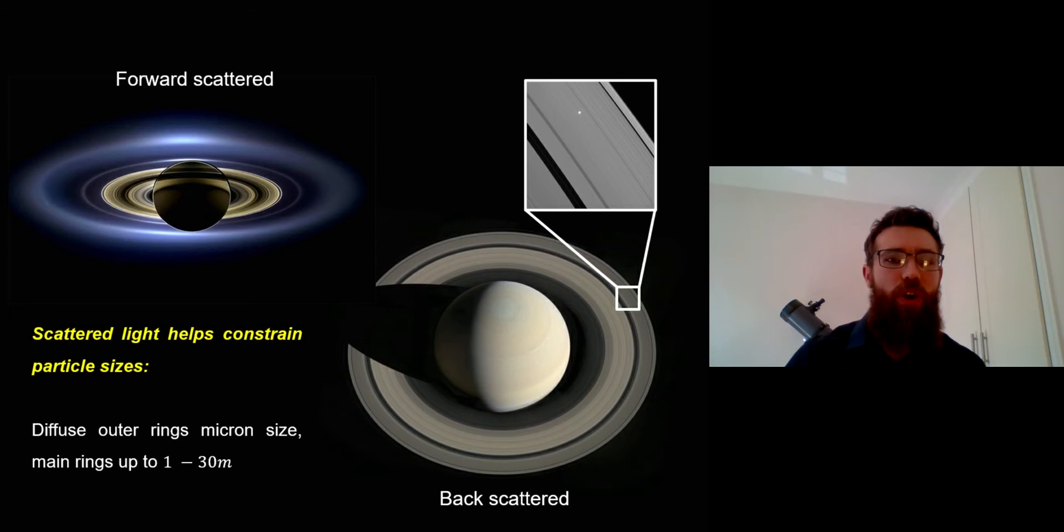Taking Saturn as an example, on the top you've got forward scattered light and we can work out the smaller particles from forward scattered light. At the bottom you've got back scattered. Forward scattered is where the sun is actually behind Saturn and the spacecraft that's taken that image, which would have been Cassini, is where we're looking at.